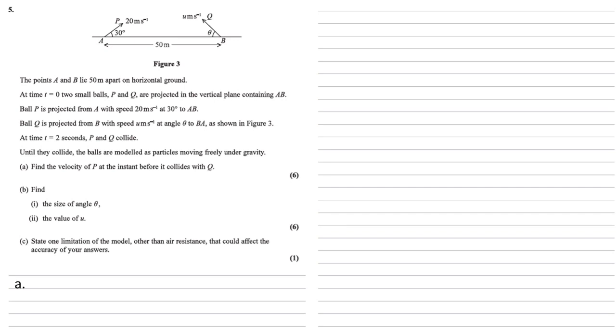For part A, we need to find the velocity of P at the instant before it collides with Q. So firstly, let's resolve this vertically. Vertically, we've got an initial speed of 20 metres per second, but it's travelling at an angle. If we look at the triangle created by that 30 degrees, we want the vertical, which is opposite the 30 degrees. So the initial velocity upwards is going to be 20 sine 30, which is 10.